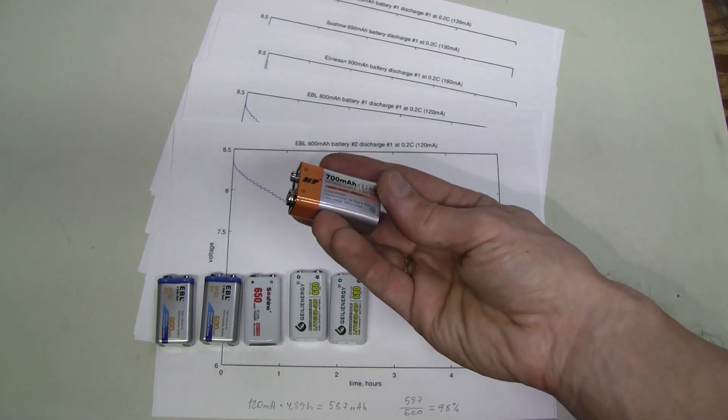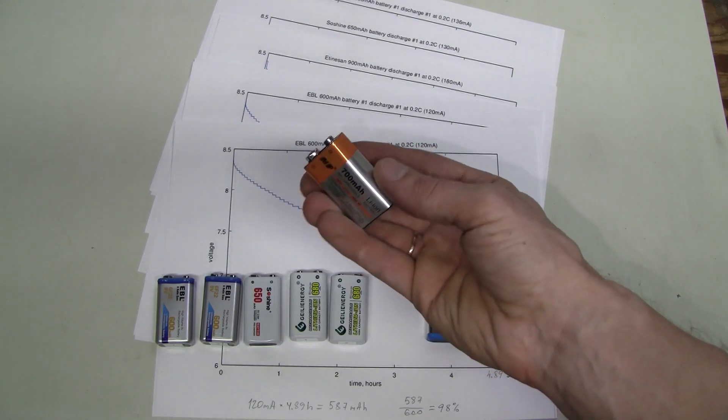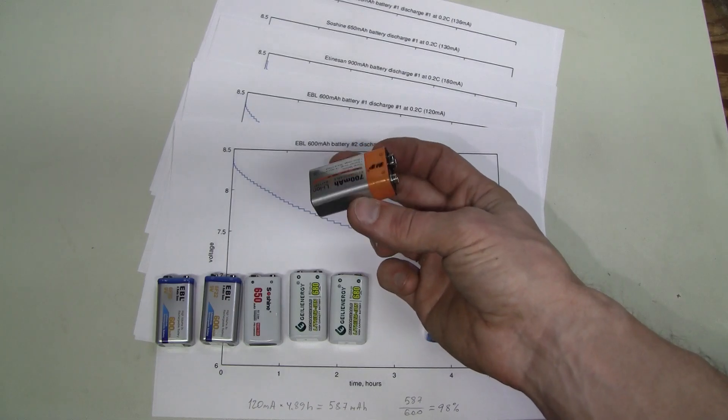So there was no output at all from the battery. And look, it bulged here. Something went really wrong with this battery.